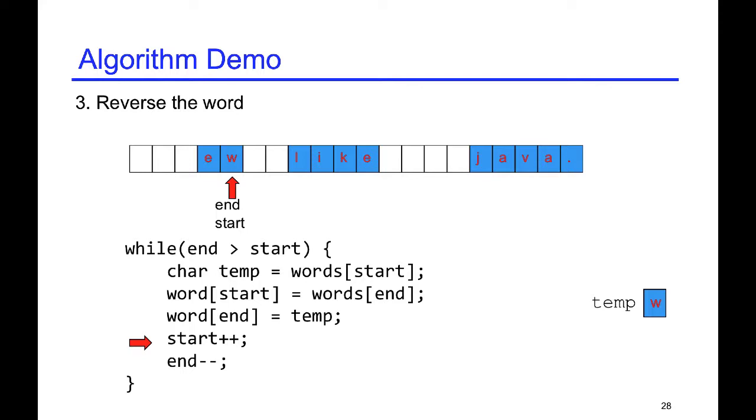And we move the start to the right, we move the end to the left. So, then this way we just exchange two characters. Because in this word we only have two characters, now we are done. Because end and start, they meet each other, we are done with the reverse of a single word.